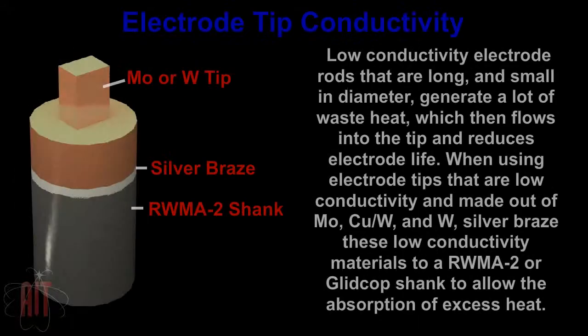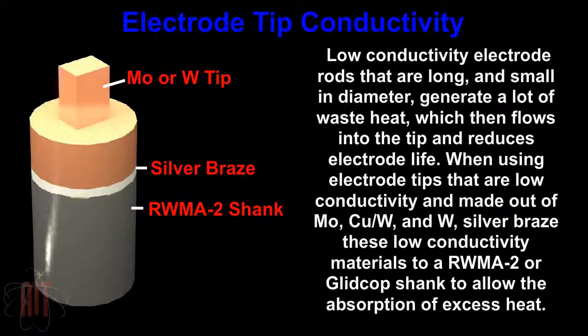Low-conductivity electrode rods that are long and small in diameter generate a lot of waste heat which then flows into the tip and reduces electrode life. When using electrode tips that are low-conductivity and made out of molybdenum, copper tungsten alloy, and tungsten, silver braze these low-conductivity materials to a RWMA-2 or Glidkop shank to allow the absorption of excess heat.